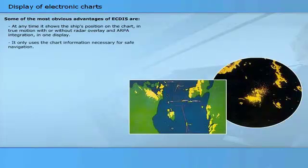Some of the most obvious advantages of ECTIS are: at any time, it shows the ship's position on the chart, in true motion, with or without radar overlay and ARPA integration, in one display. It only uses the chart information necessary for safe navigation.